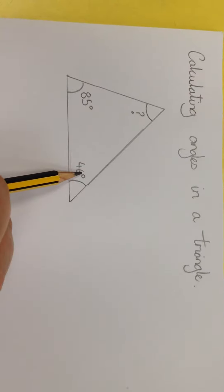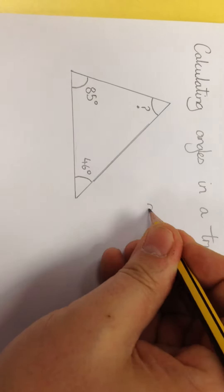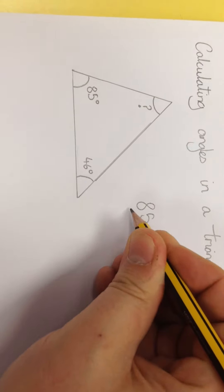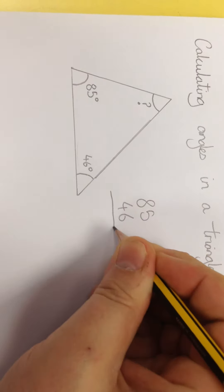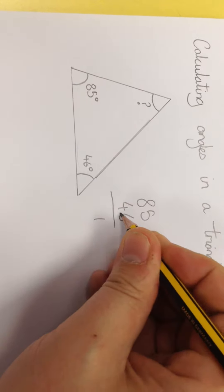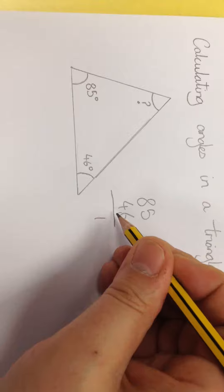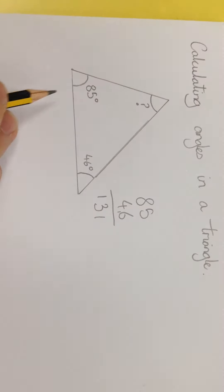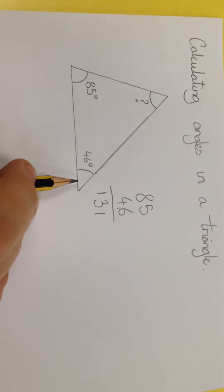First of all, I need to find out what angles I've got altogether. So I'm going to add those together to work out what we have. 5 plus 6 is 11, carry the 1. 8 plus 4 is 12, plus 1 is 13. So I know that these two together add up to 131.